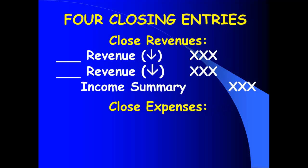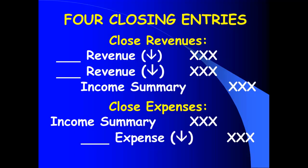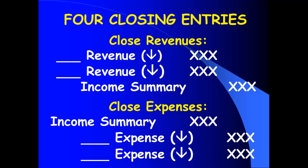The second closing entry closes out expenses. Expenses have a debit balance to begin with, so we're going to close out each expense with a credit — credit each expense individually. Then I'm going to make one debit to Income Summary for the total. So close out revenues, close out expenses — both of those get closed out into the Income Summary account.